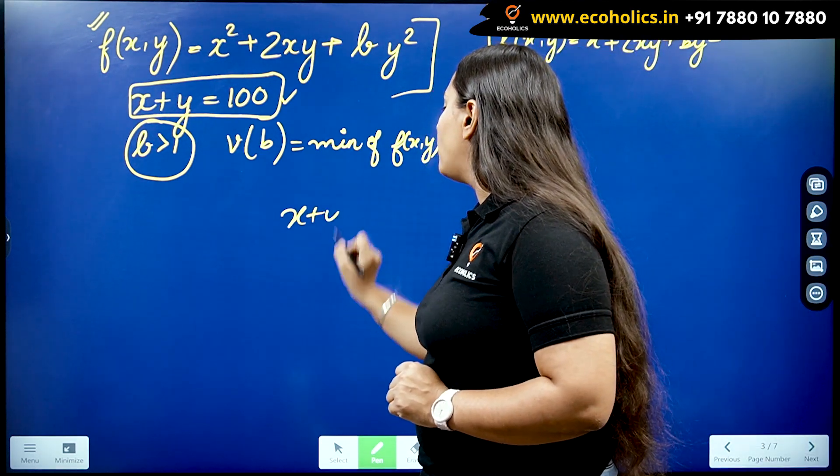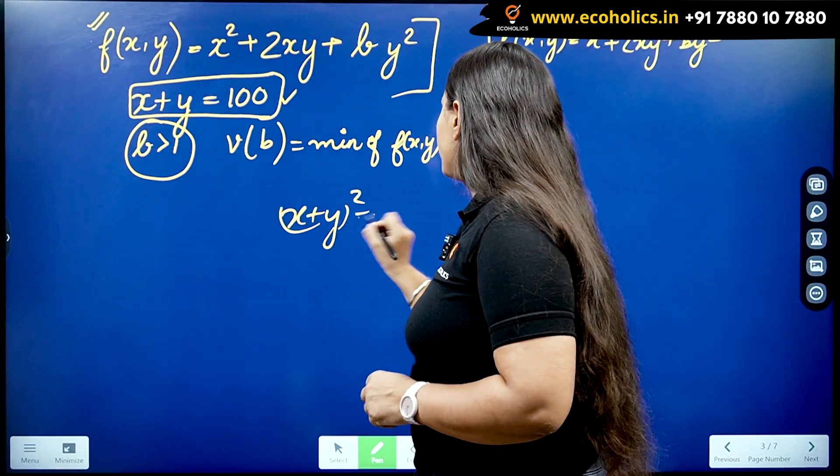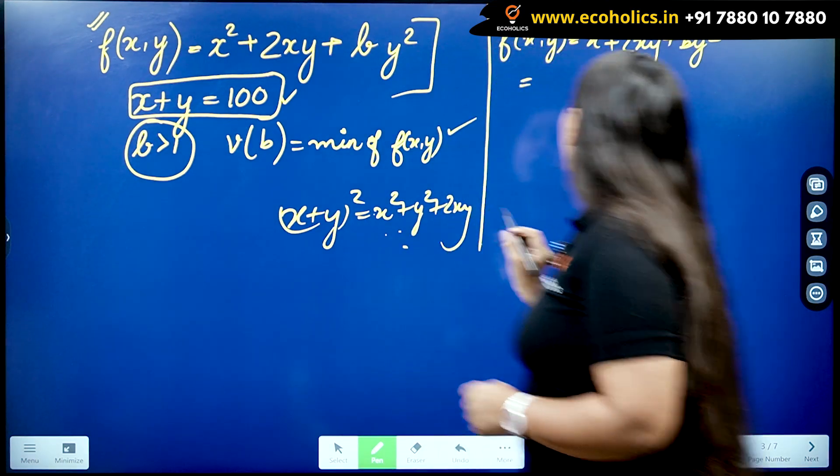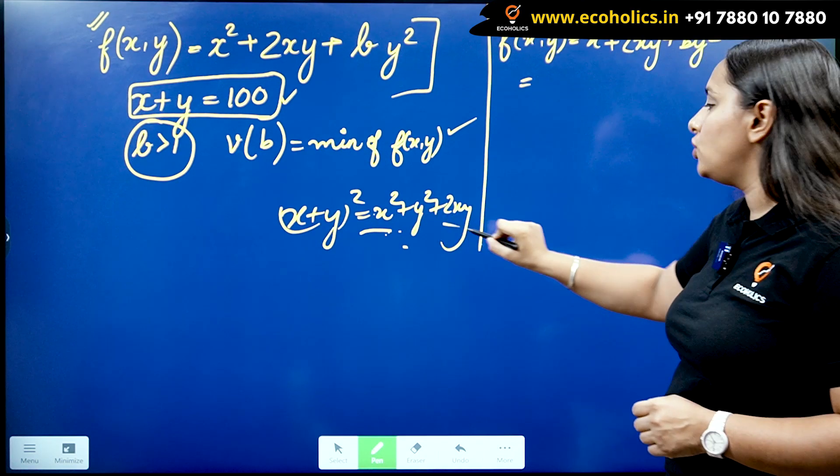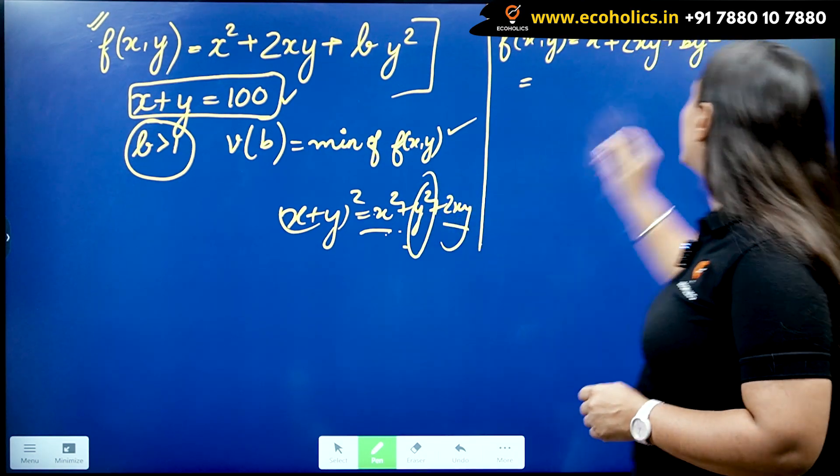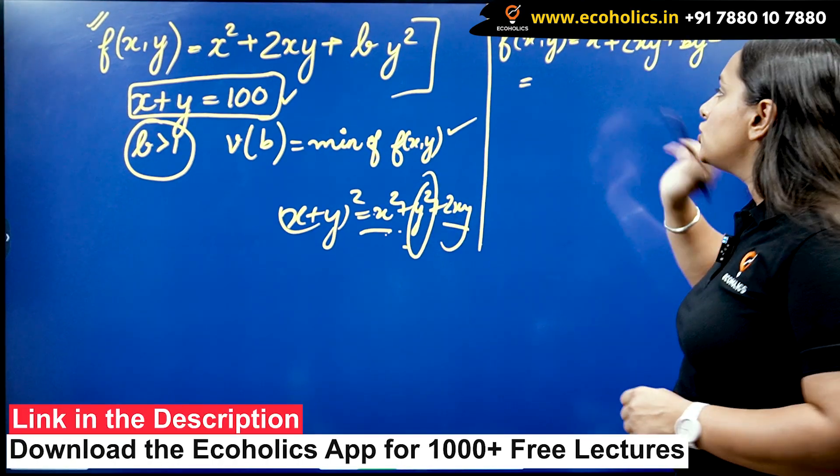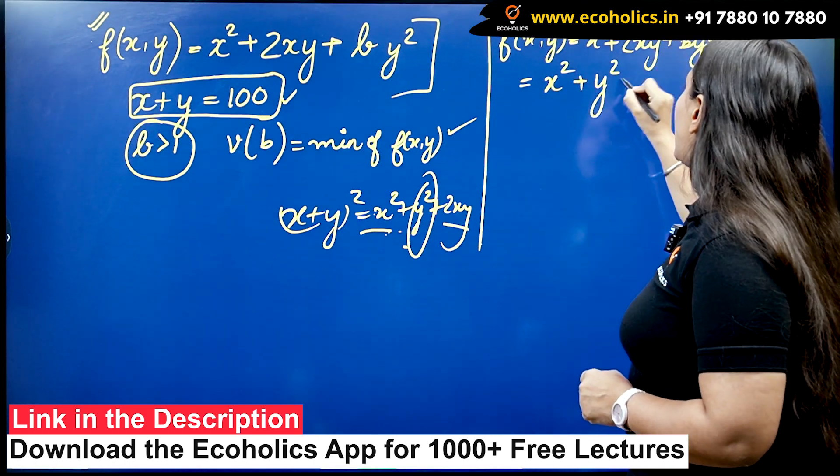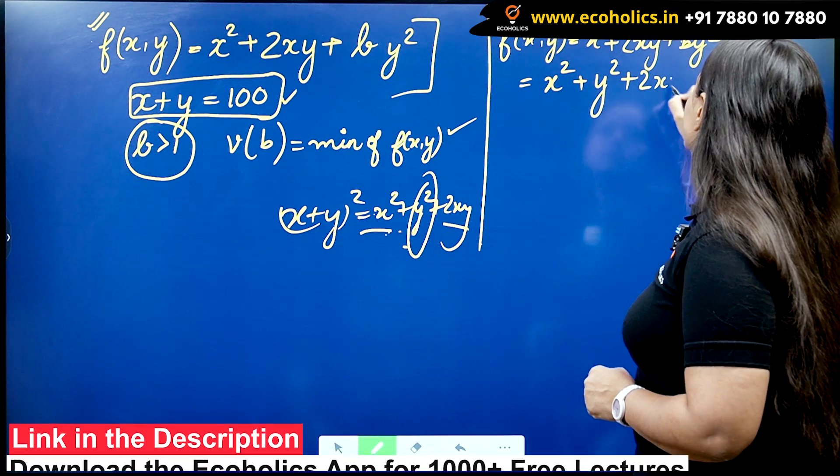If I have x + y, if I try to think about the x + y like a whole square, what it is? It's going to be x² + y² + 2xy. So I have the term x², I have the term 2xy, but I don't have y² because I have by².